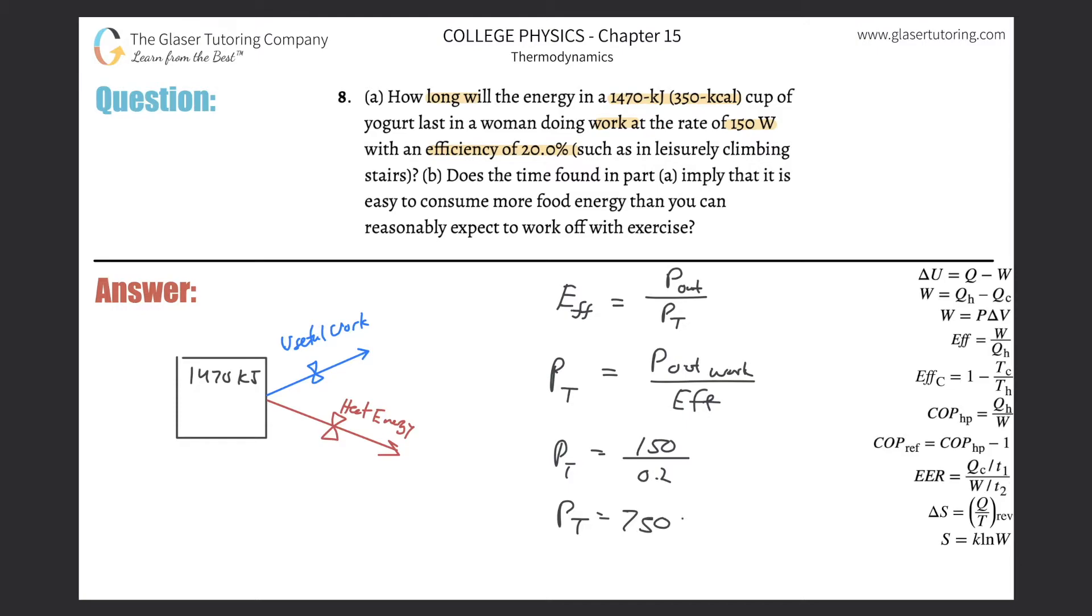Let me be more specific: this is the power being produced to do useful work divided by the total power of metabolism. This is the rate at which useful work is being performed divided by the rate at which compounds are being metabolized inside the body - the total amount of energy being converted.